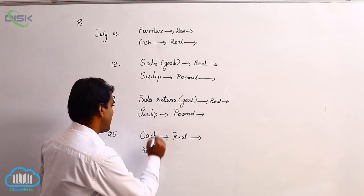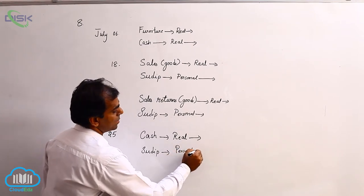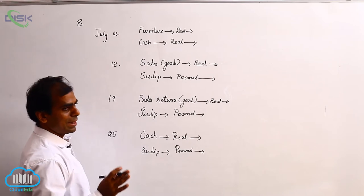Next is Sudip. So again Sudip is coming, the same person, personal account. So he is the giver. So check, the giver has to be credited or debited.